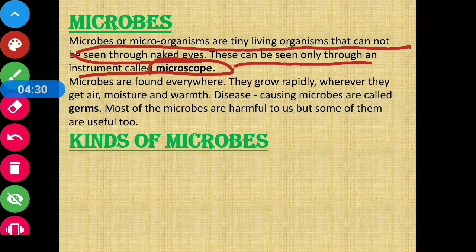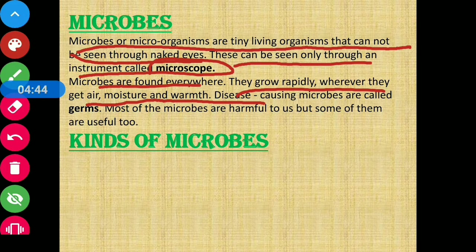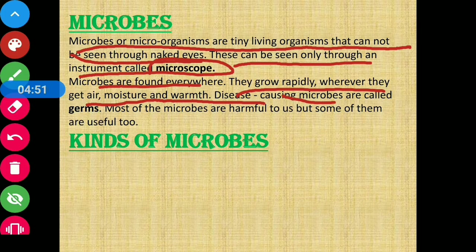Microbes can be found anywhere. They grow rapidly wherever they get air, moisture and warmth — jahan pe bhi unhein air ya moisture ya garmahat milti hai, woh bahut jaldi grow karna shuru kar dete hain. Disease-causing microbes are called germs. Jo microbes disease paida karte hain, unhe germs kaha jaata hai.